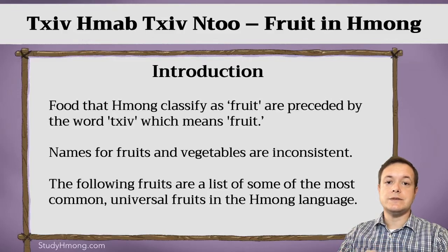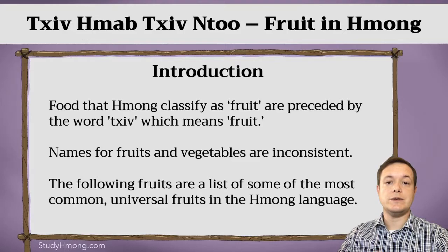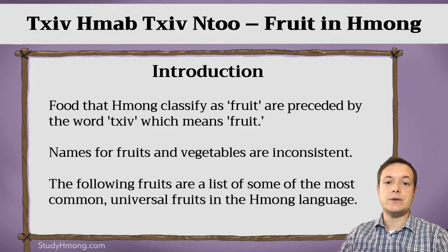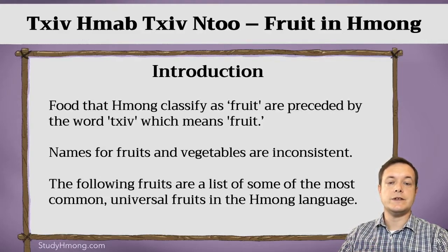Names of fruits and vegetables are inconsistent, and this is the same in English. That's why we have Latin names or scientific names for fruit — because in one part of the world people may call a fruit something, and in another part of the world they call the same fruit something else. The Hmong is no different. In one part of the world they may have one name for it, and in another part they may have another name for it. So the following are a list of fruits that are most common and universal in the Hmong language — generally, if you say these fruits without any context, most Hmong people will understand what you're referring to.